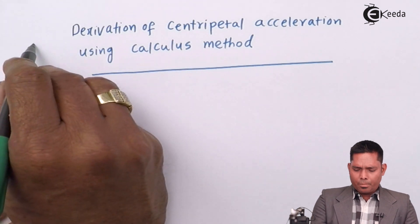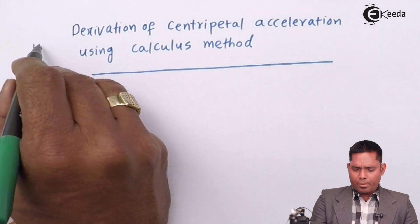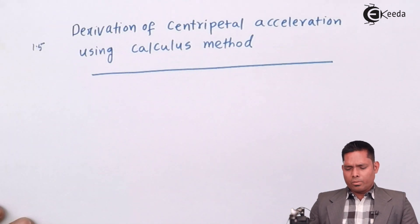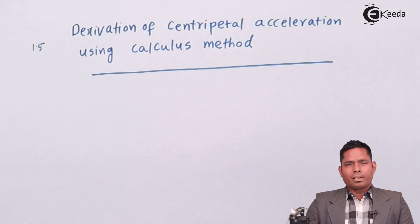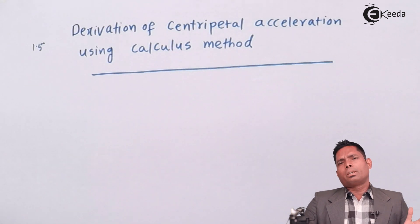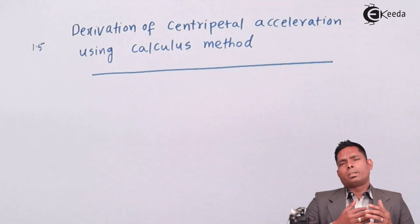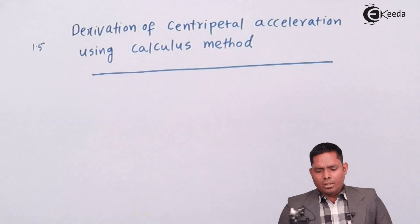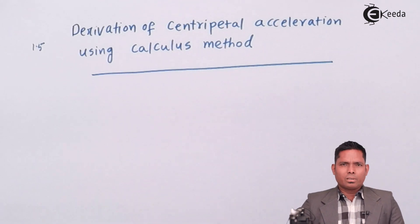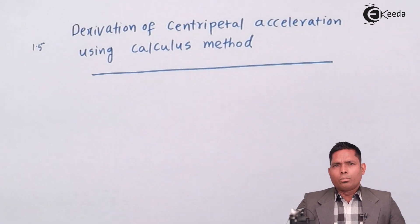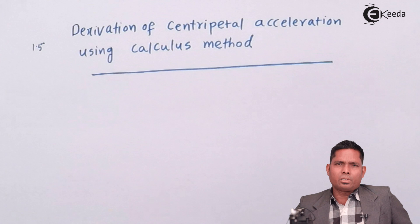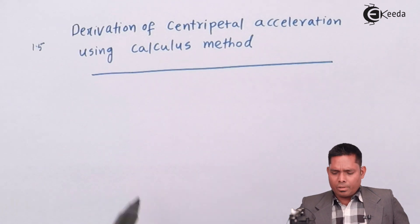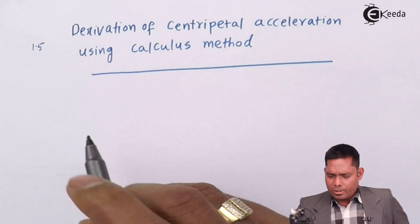This topic falls under section 1.5 where we discussed centripetal acceleration. That was the first method — the geometrical method. This is the second method, which is the calculus method. You might have other methods, but those are not required. We will consider this one.